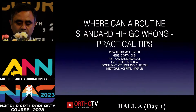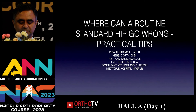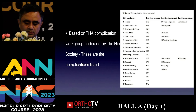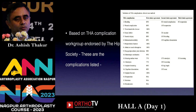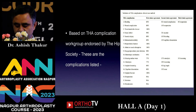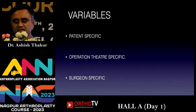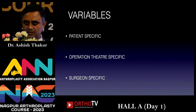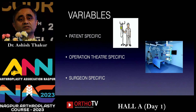I'm Dr. Ashish Thakur and today I'm going to talk on a somewhat lengthy topic: where can a routine standard hip go wrong and the practical tips to avoid it. The total hip arthroplasty complication work group prepared a list of 18 complications endorsed by the Hip Society, including bleeding, wound complications, and various others. Any complication in a routine THR results from a chain of events that can start during the preoperative phase and involve processes during and after surgery. Variables can be divided into patient-specific, OT-specific, and — most importantly — surgeon-specific.